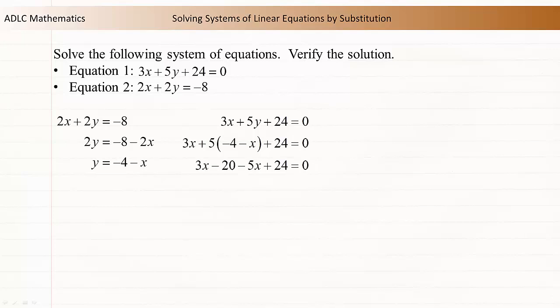Multiply the 5 through the brackets. 5 times -4 is -20. 5 times -x is -5x. This simplifies to -2x + 4 = 0.